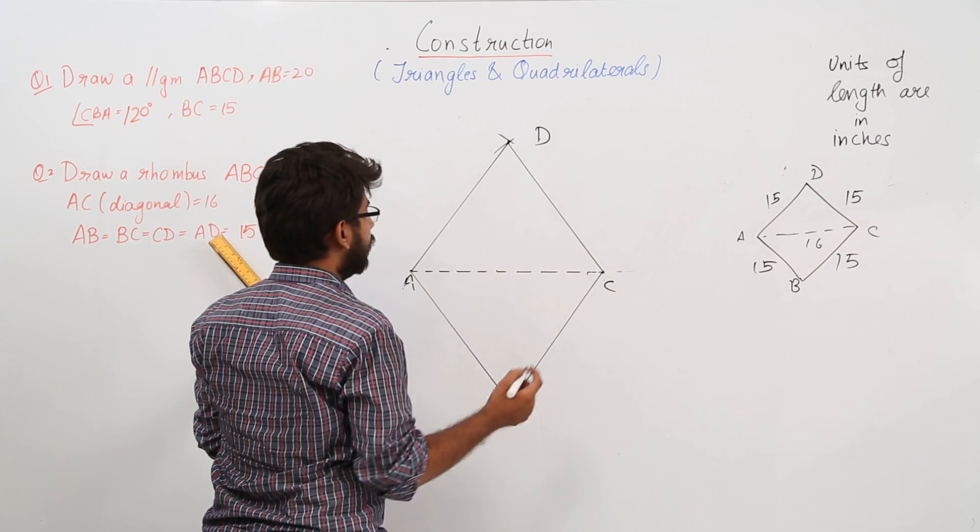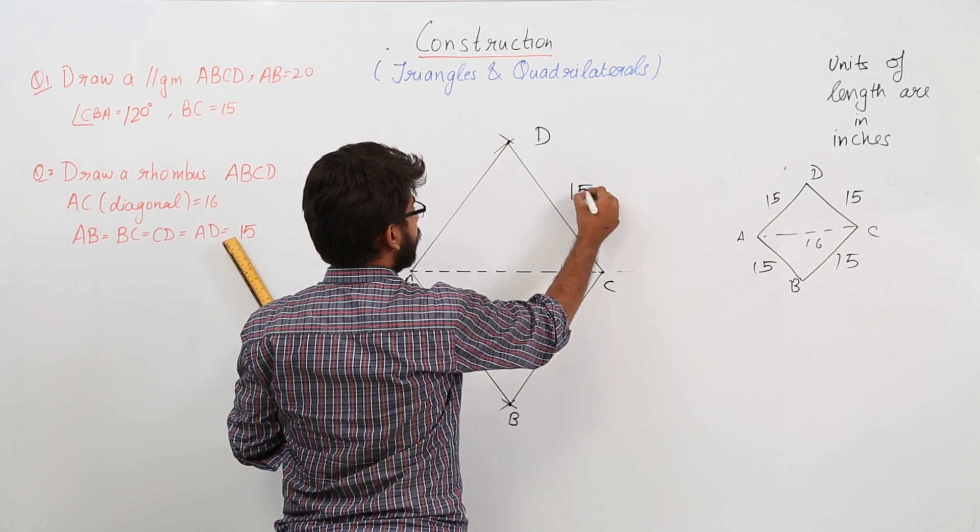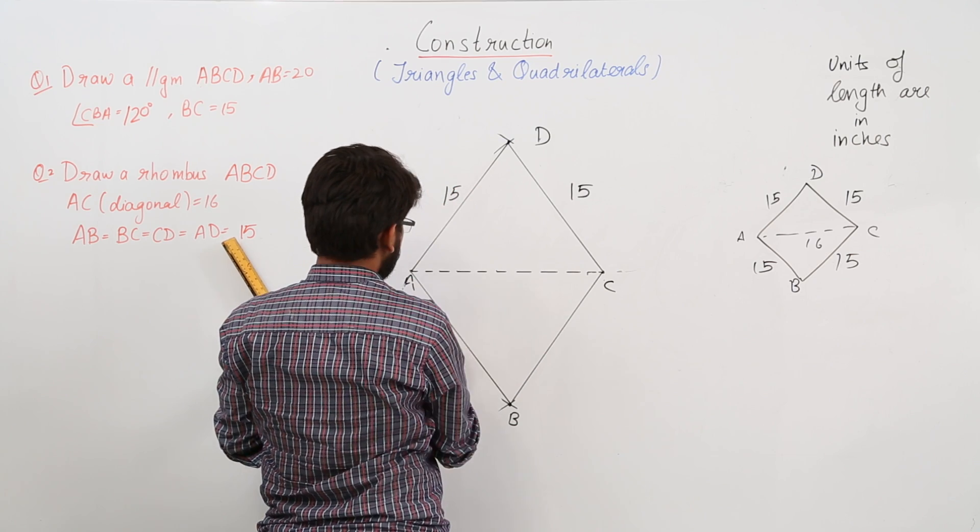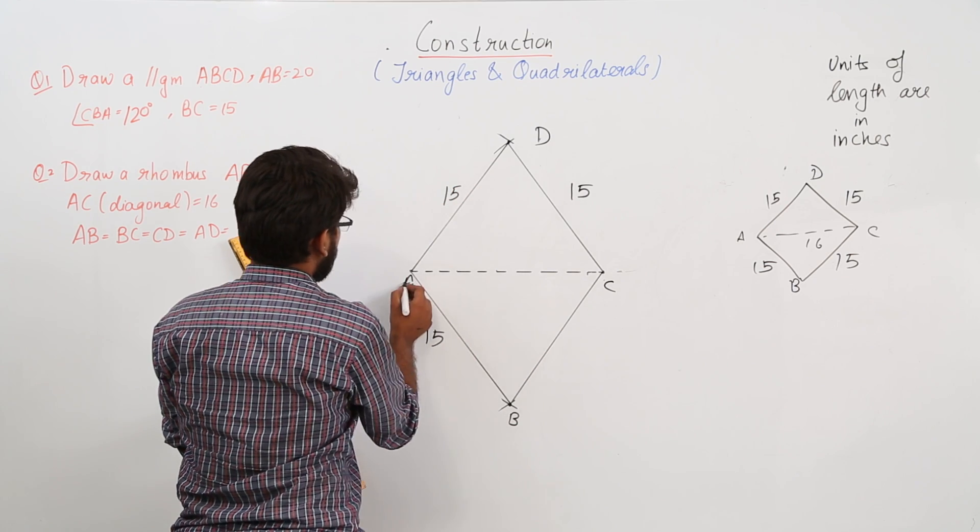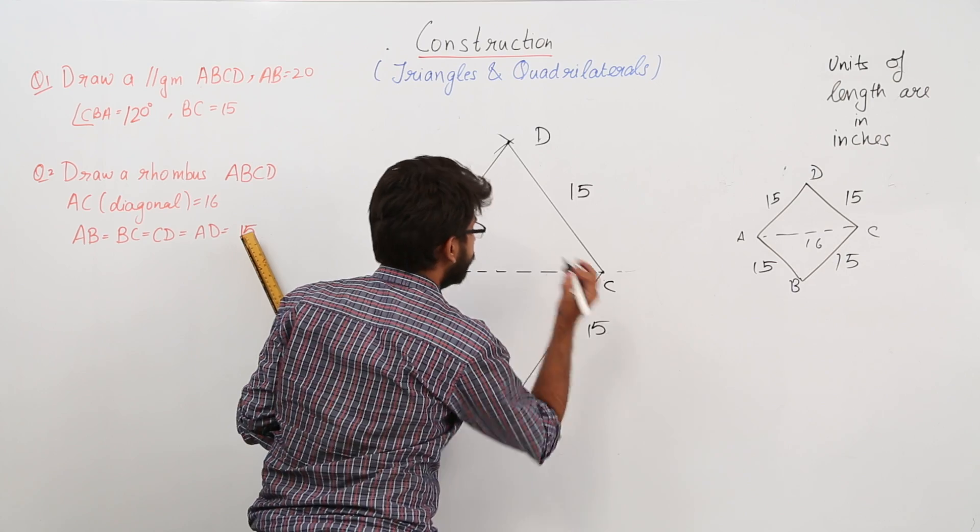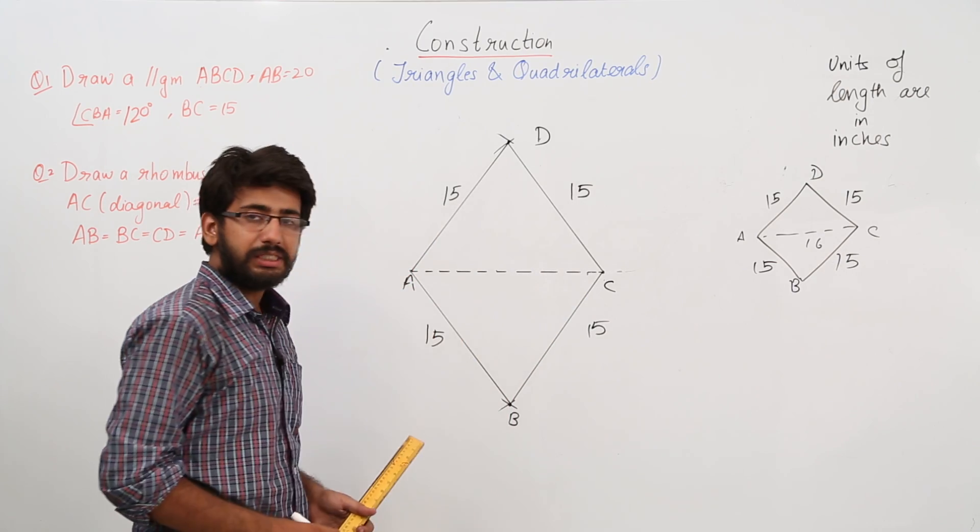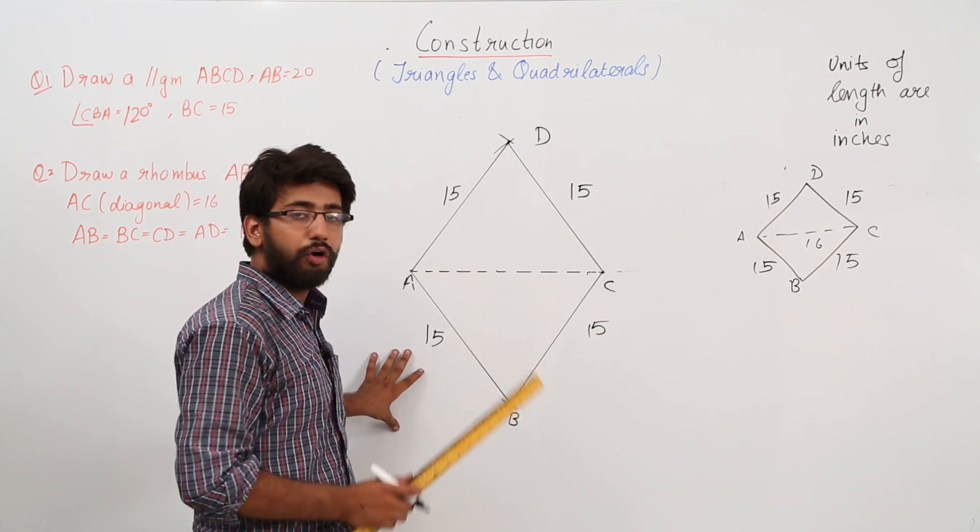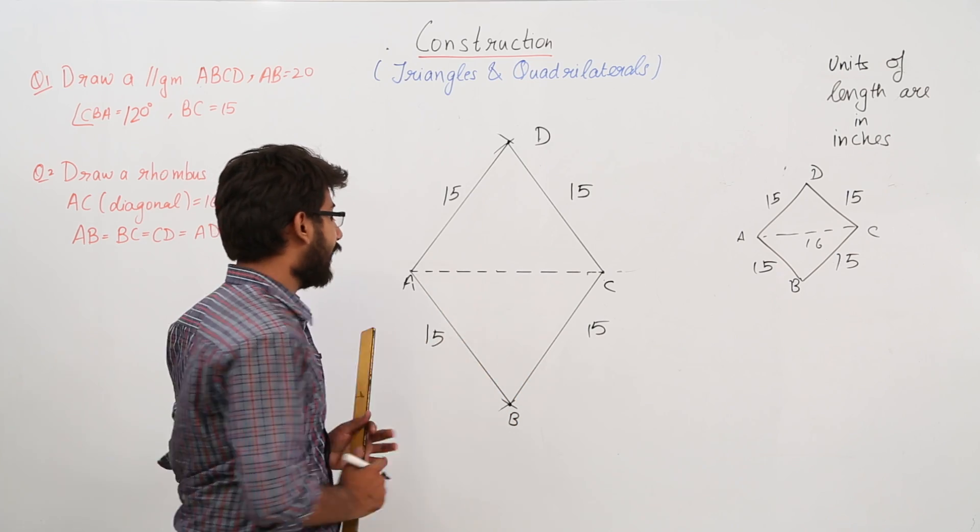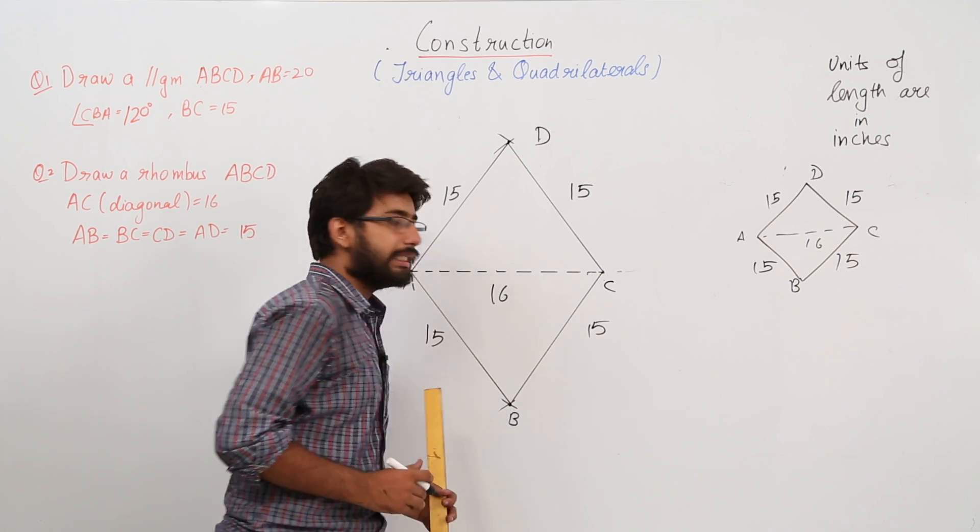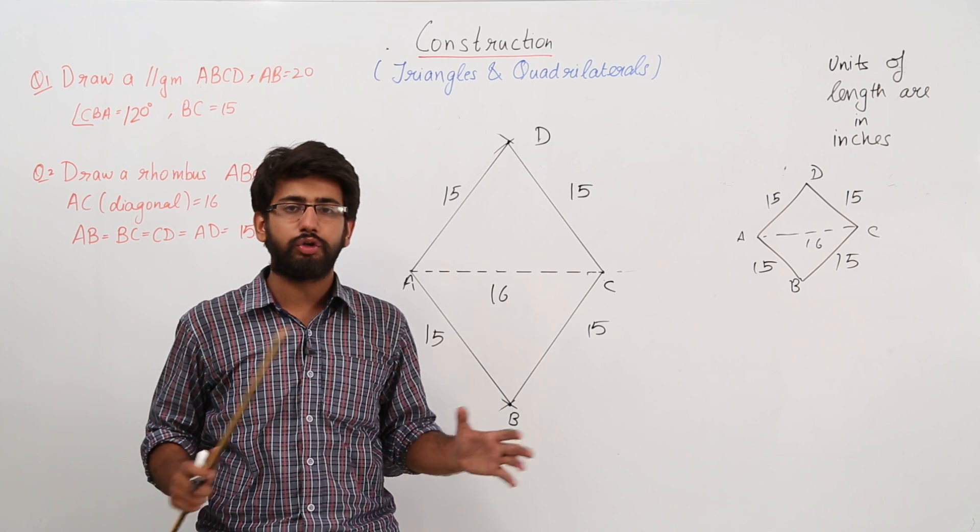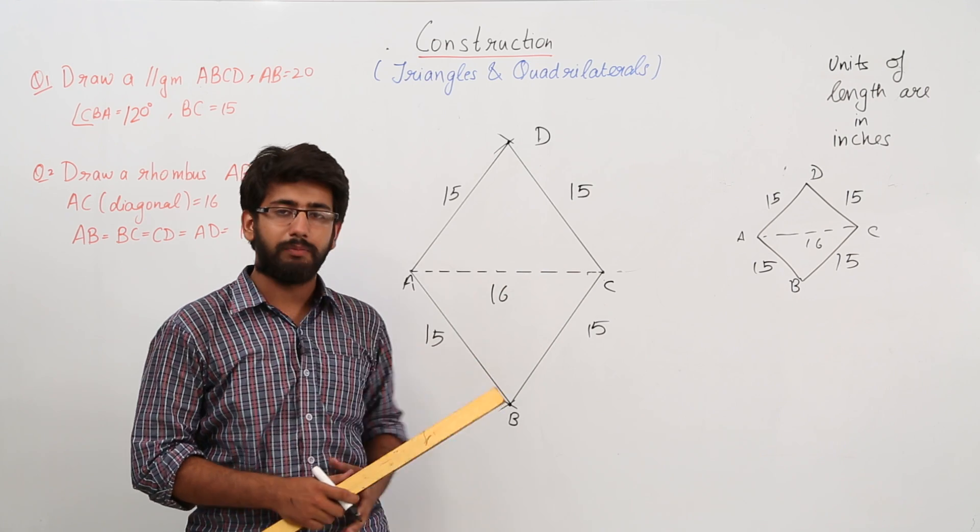Now write down the measurements. This is 15 inches, this is 15 inches, this is 15 inches, and this is also 15 inches. So this is a rhombus in which all the sides are of the length 15 inches and the diagonal is of the length 16 inches. So it is very easy to construct this rhombus.